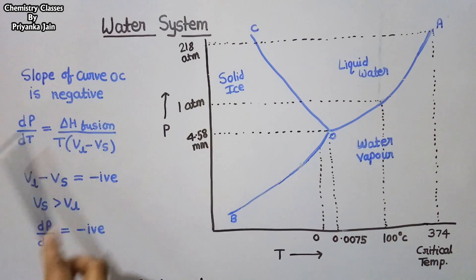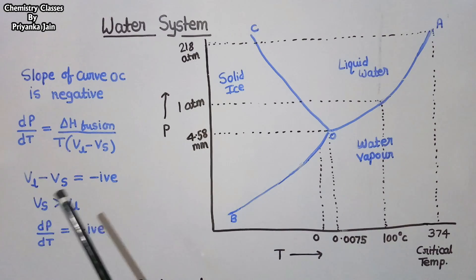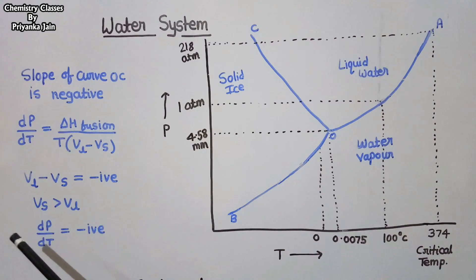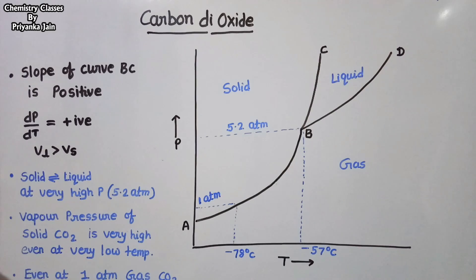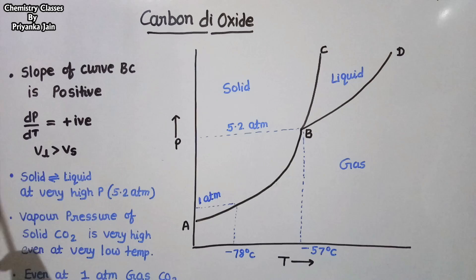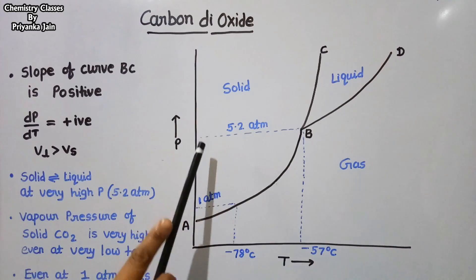A question on this particular point has been asked in the CSIR NET exam. Another important phase diagram is for carbon dioxide. Carbon dioxide is another one component system, and this is its phase diagram.